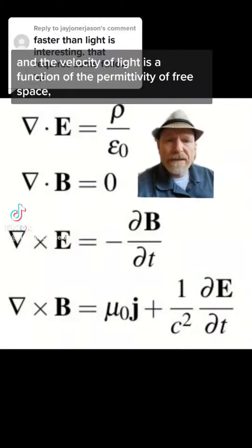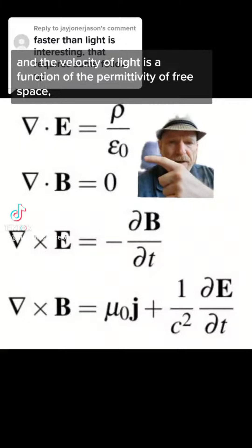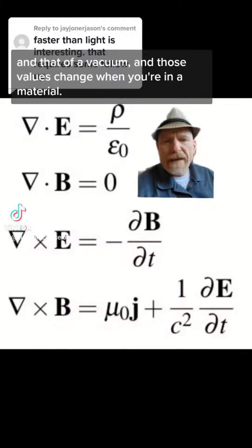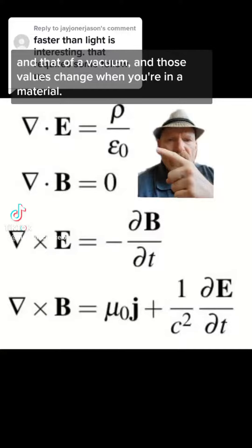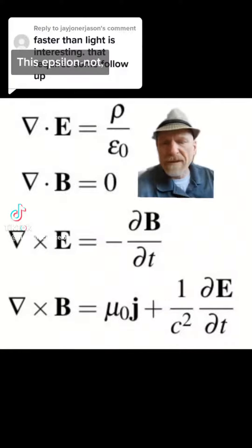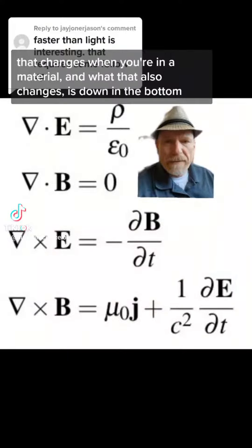The velocity of light is a function of the permittivity of free space and that of a vacuum. Those values change when you're in a material. This epsilon knot, that changes when you're in a material.